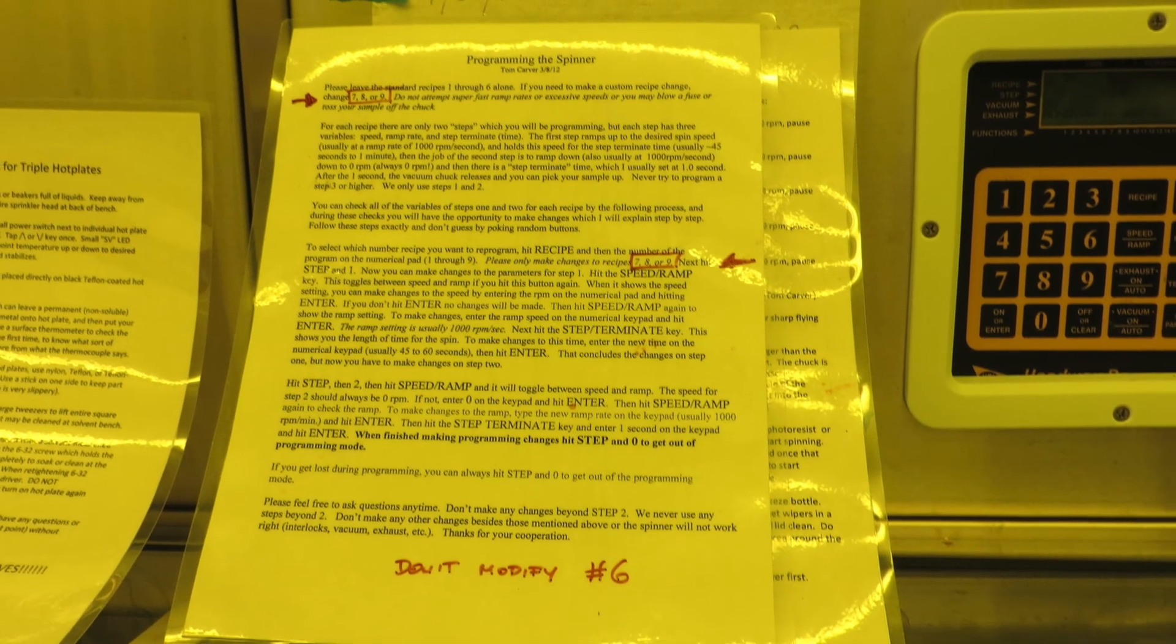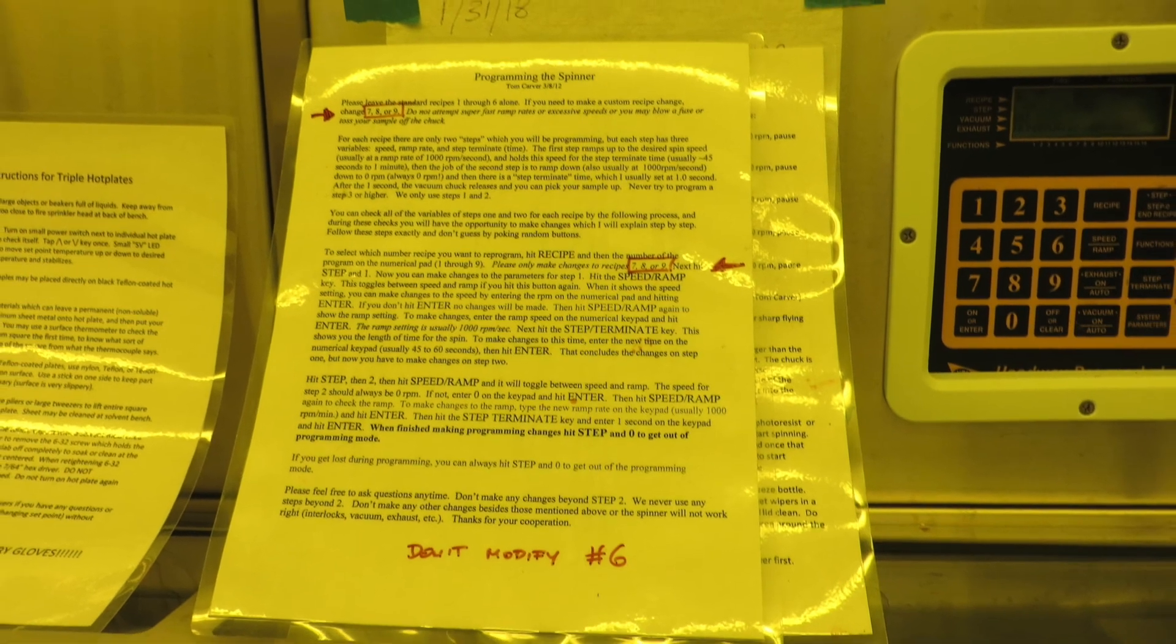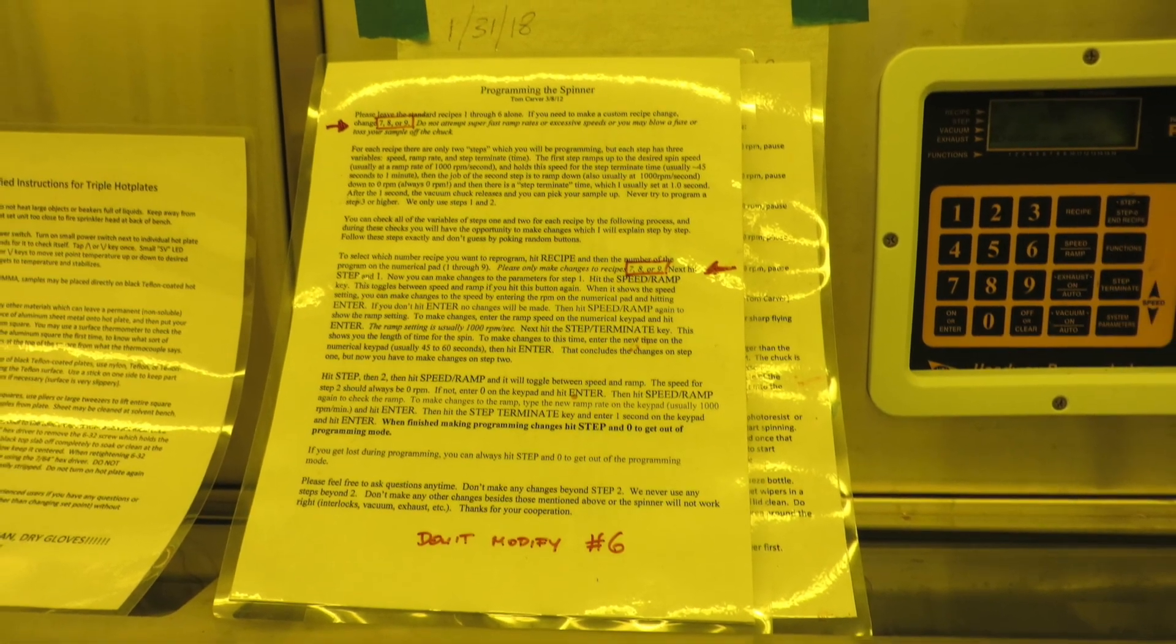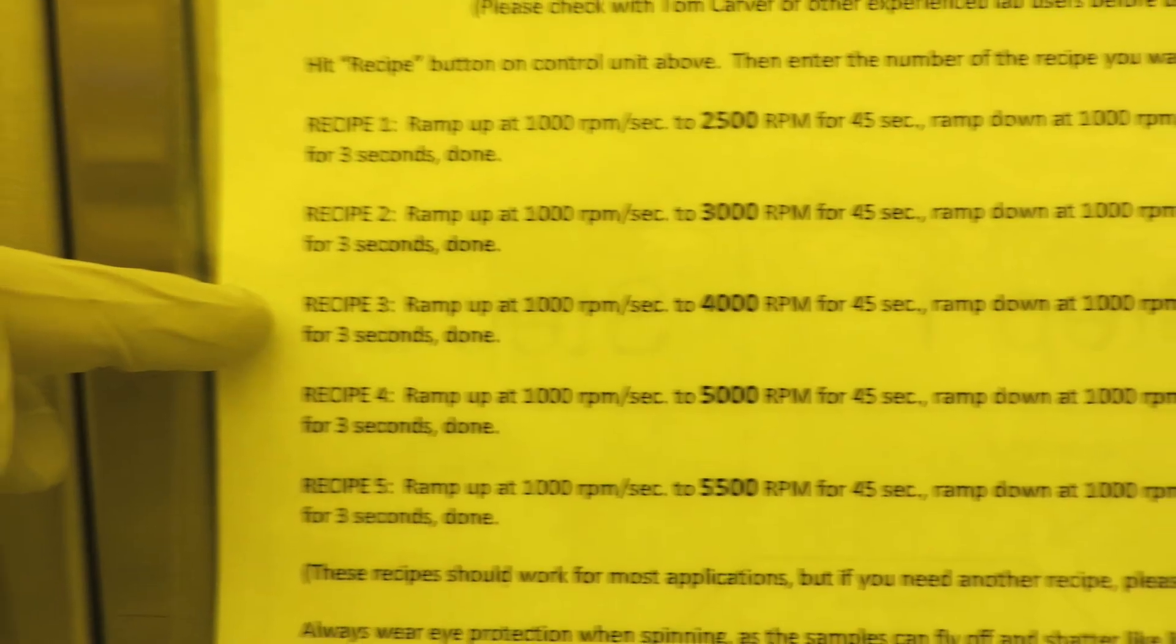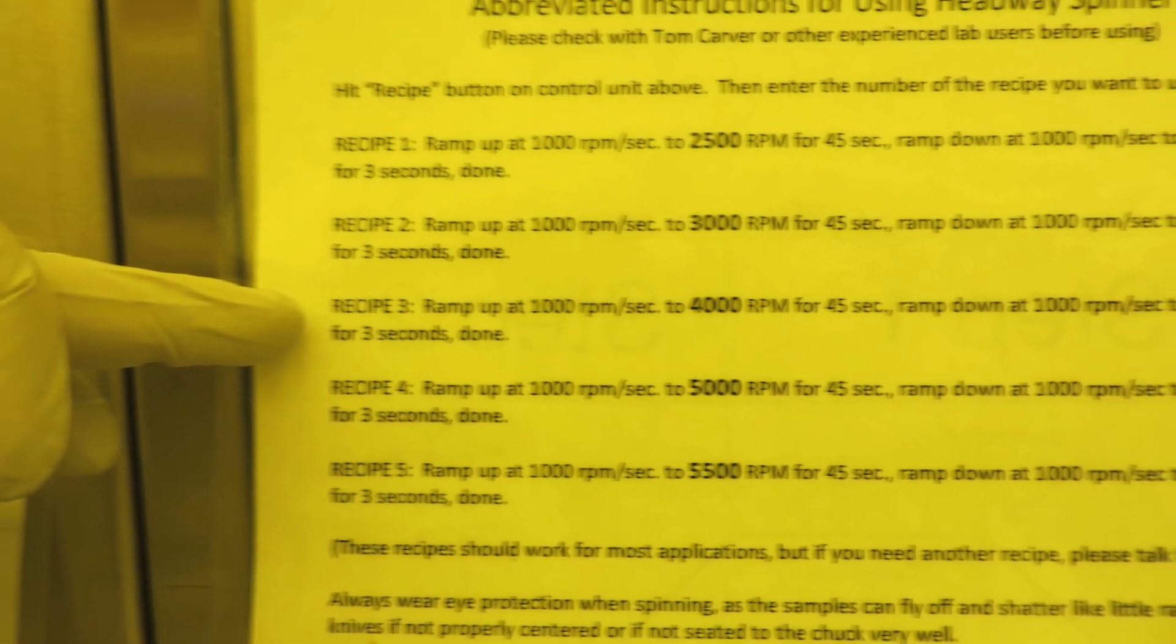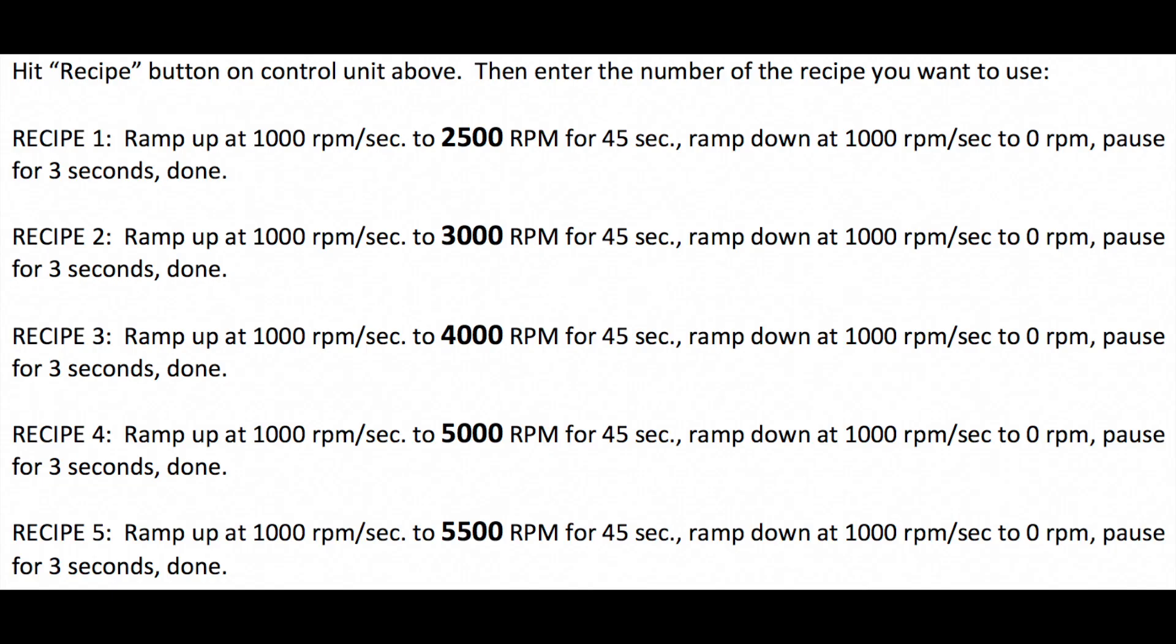To the left of the spinner controls are some laminated cards that give you information on programming the spinner. It also shows the list of recipes that are programmed into the spinner already. If you are using one of the standard recipes, it is very easy. If you need to make a custom recipe, I will get into that later.